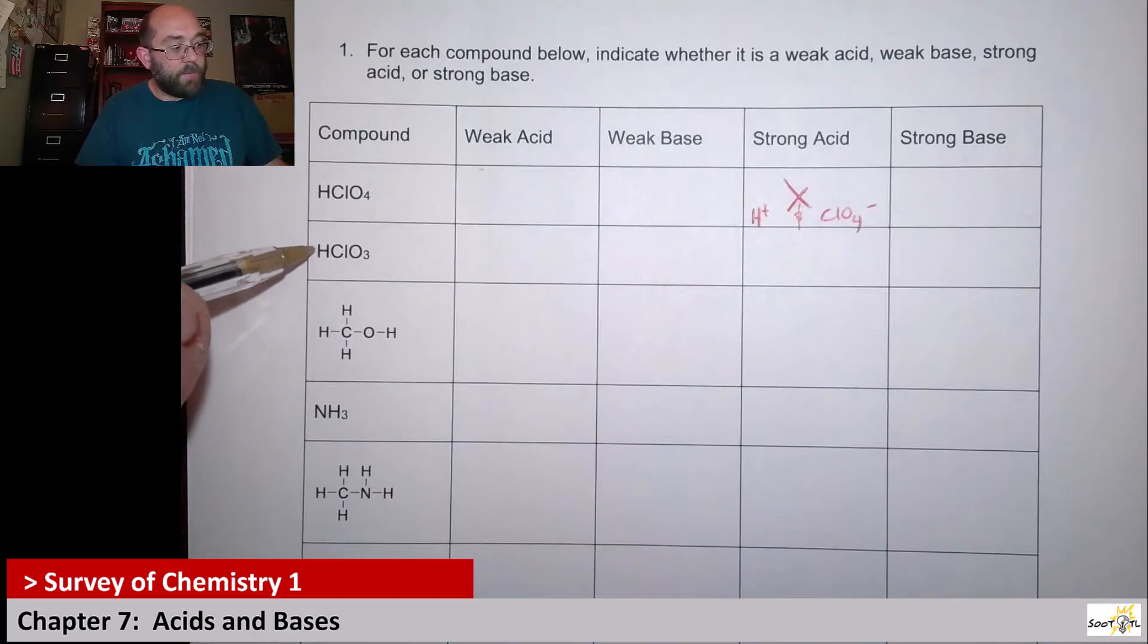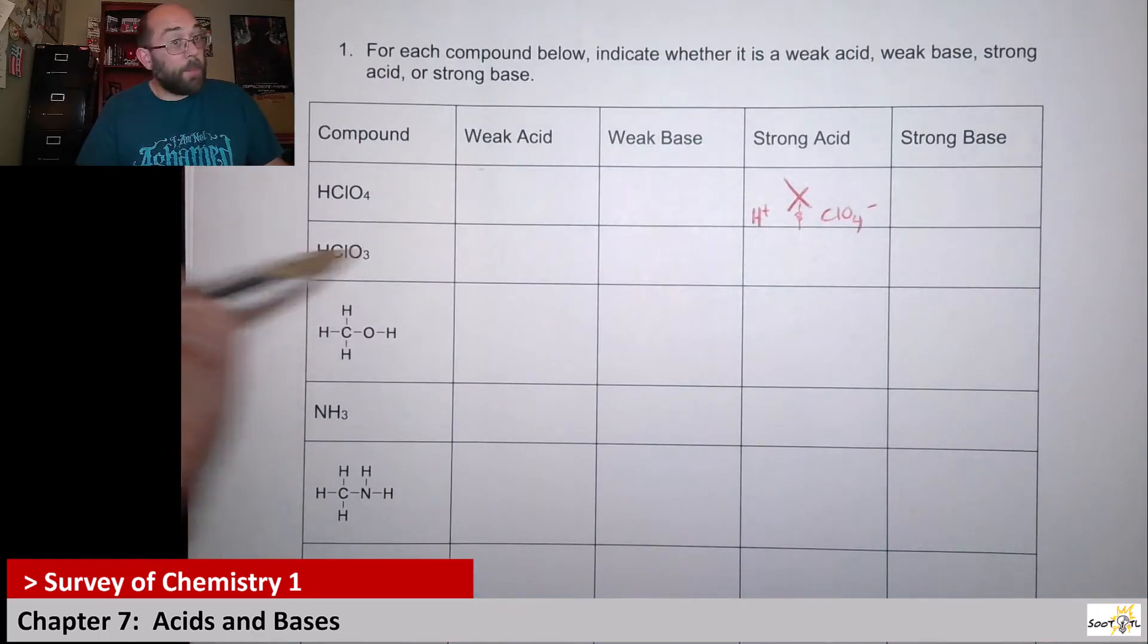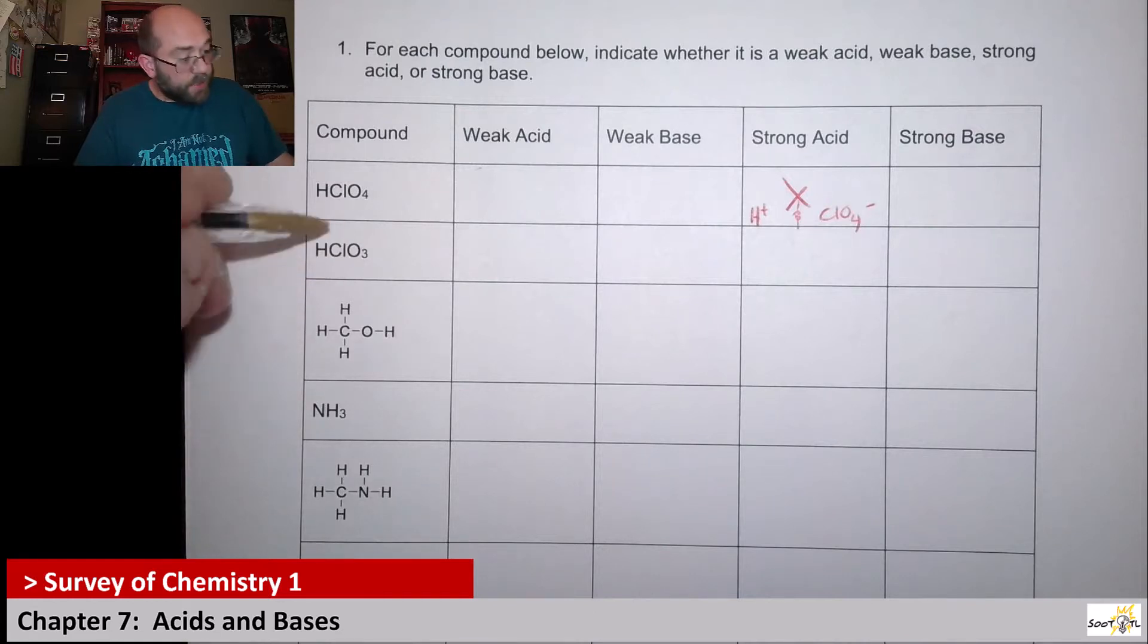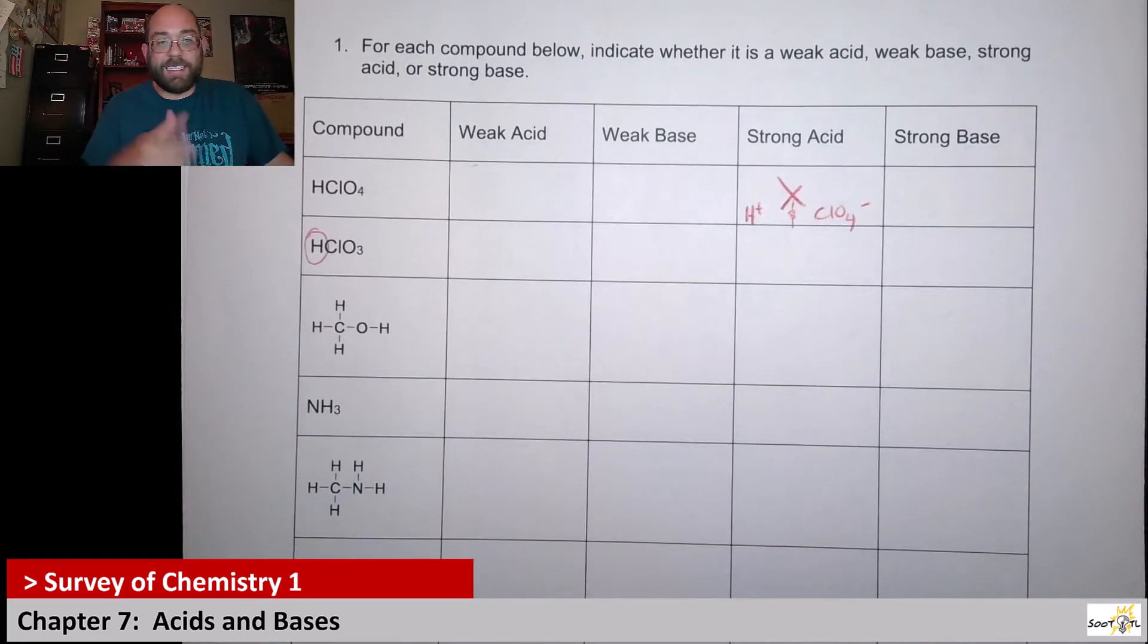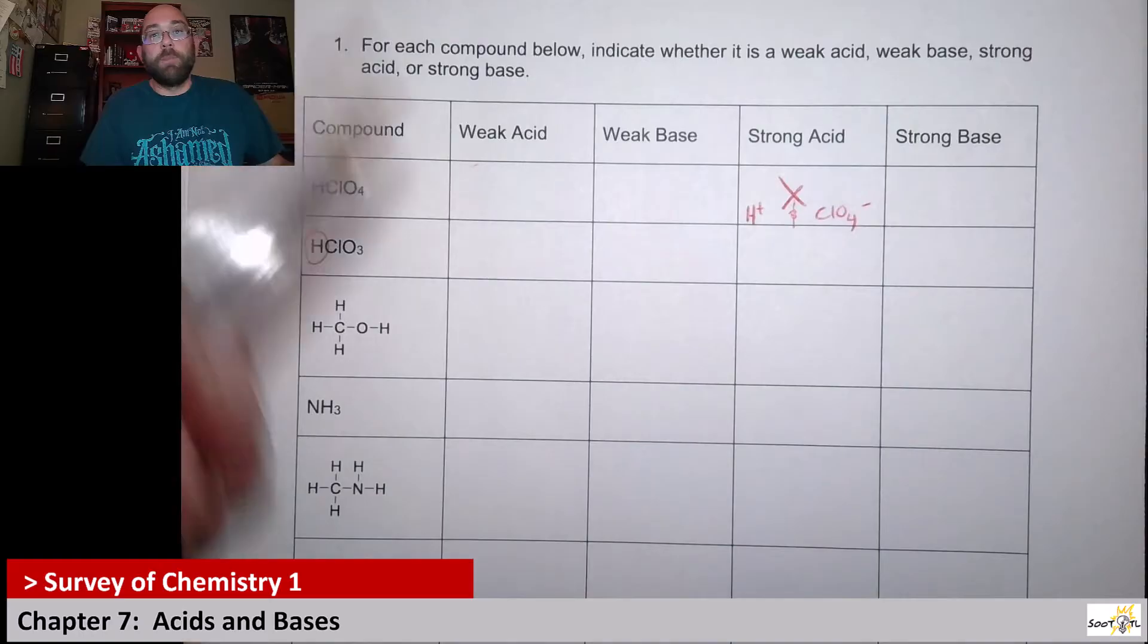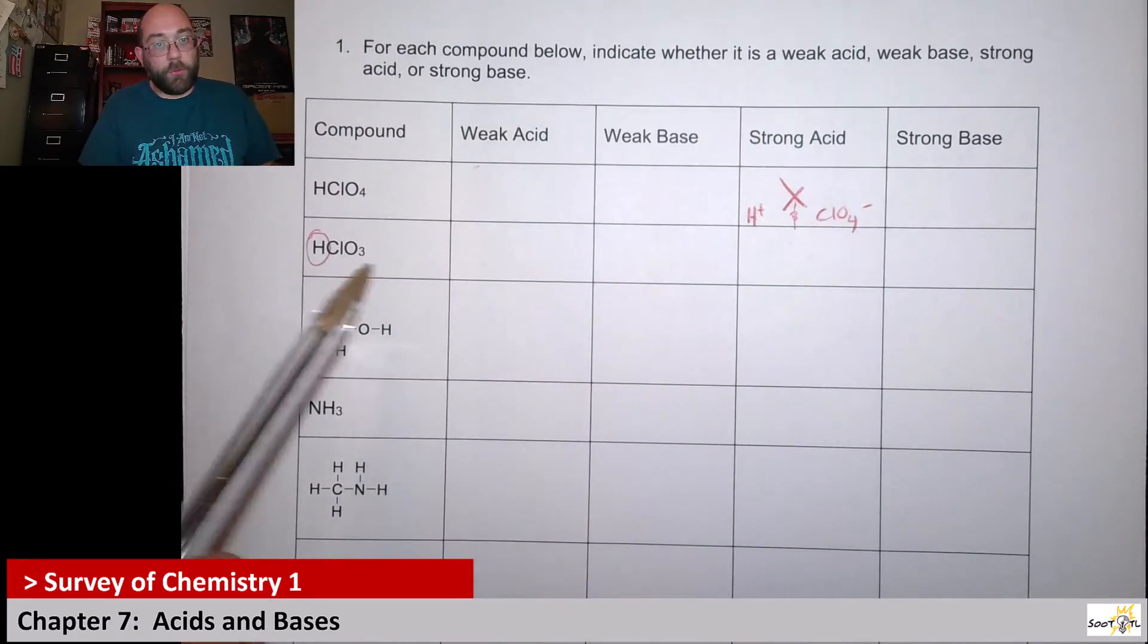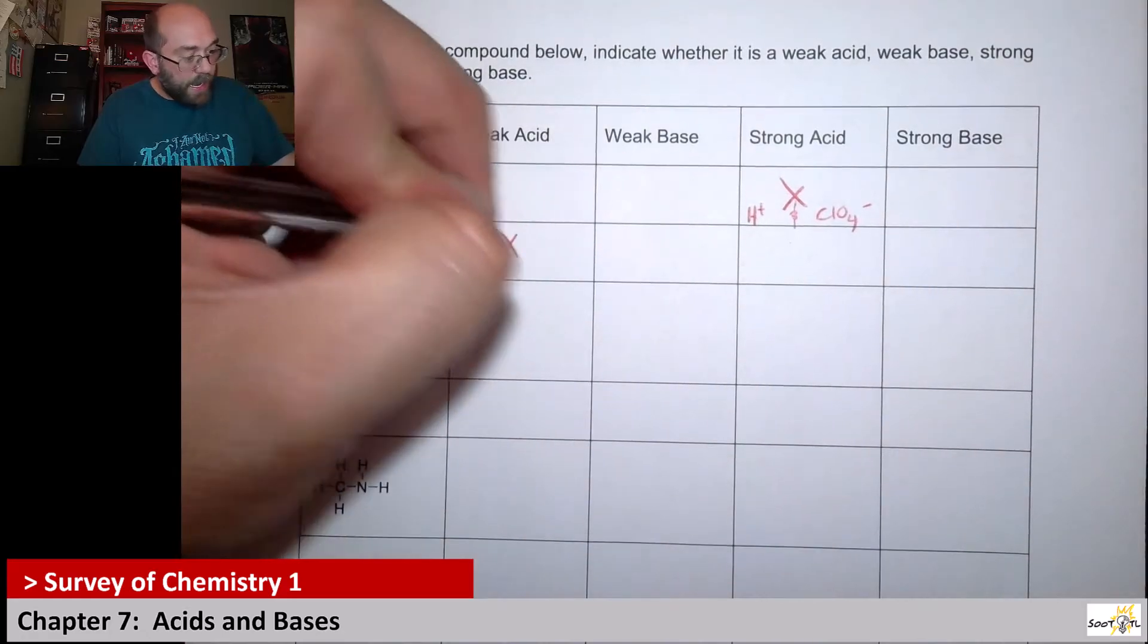Now here we have chloric acid, not perchloric, chloric acid. This is still an acid because you see the H in front—that tells you it has a tendency to donate a proton like an acid does. But it's not a strong acid because it's not ClO4, it's ClO3. So this is a weak acid.